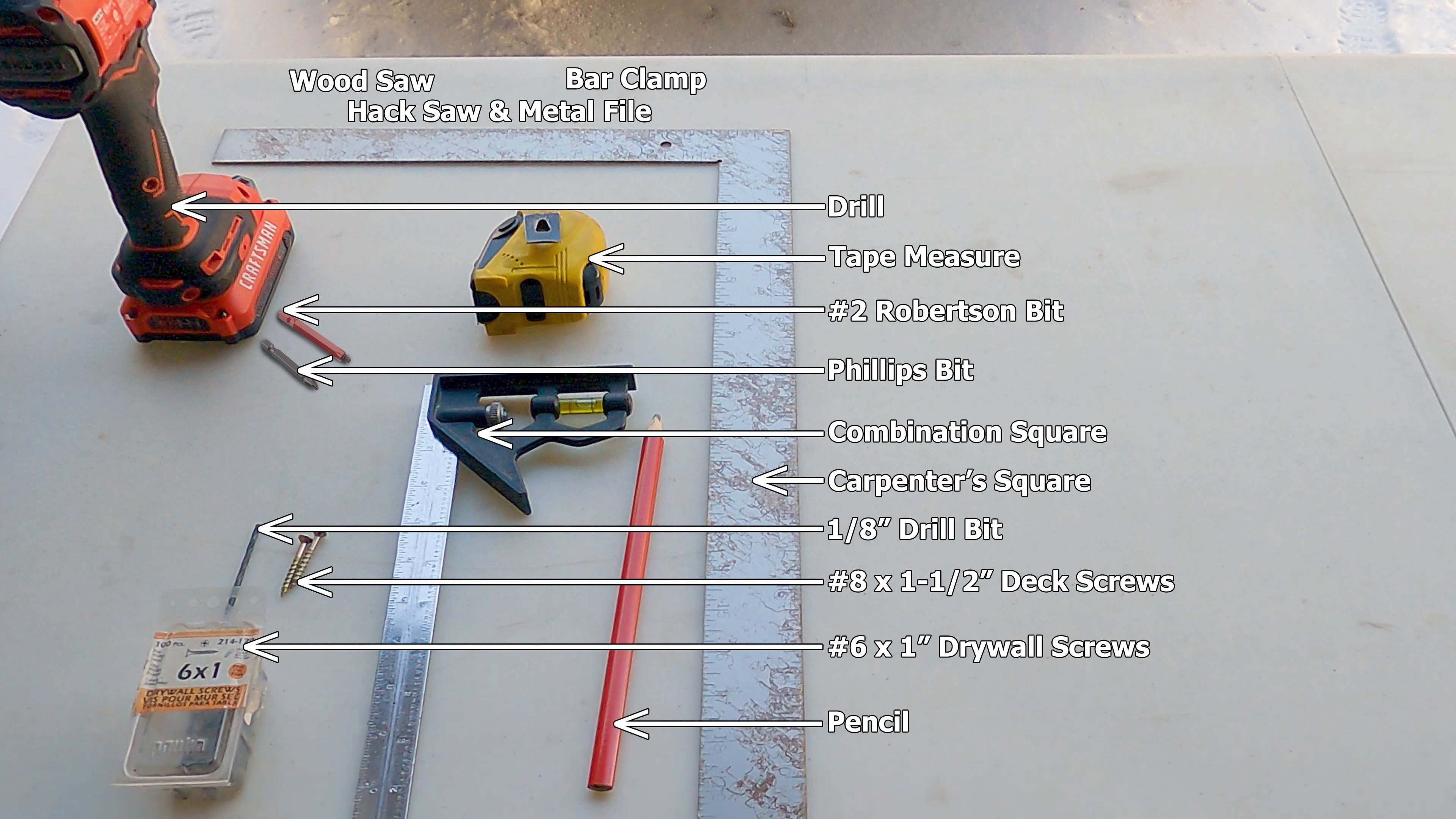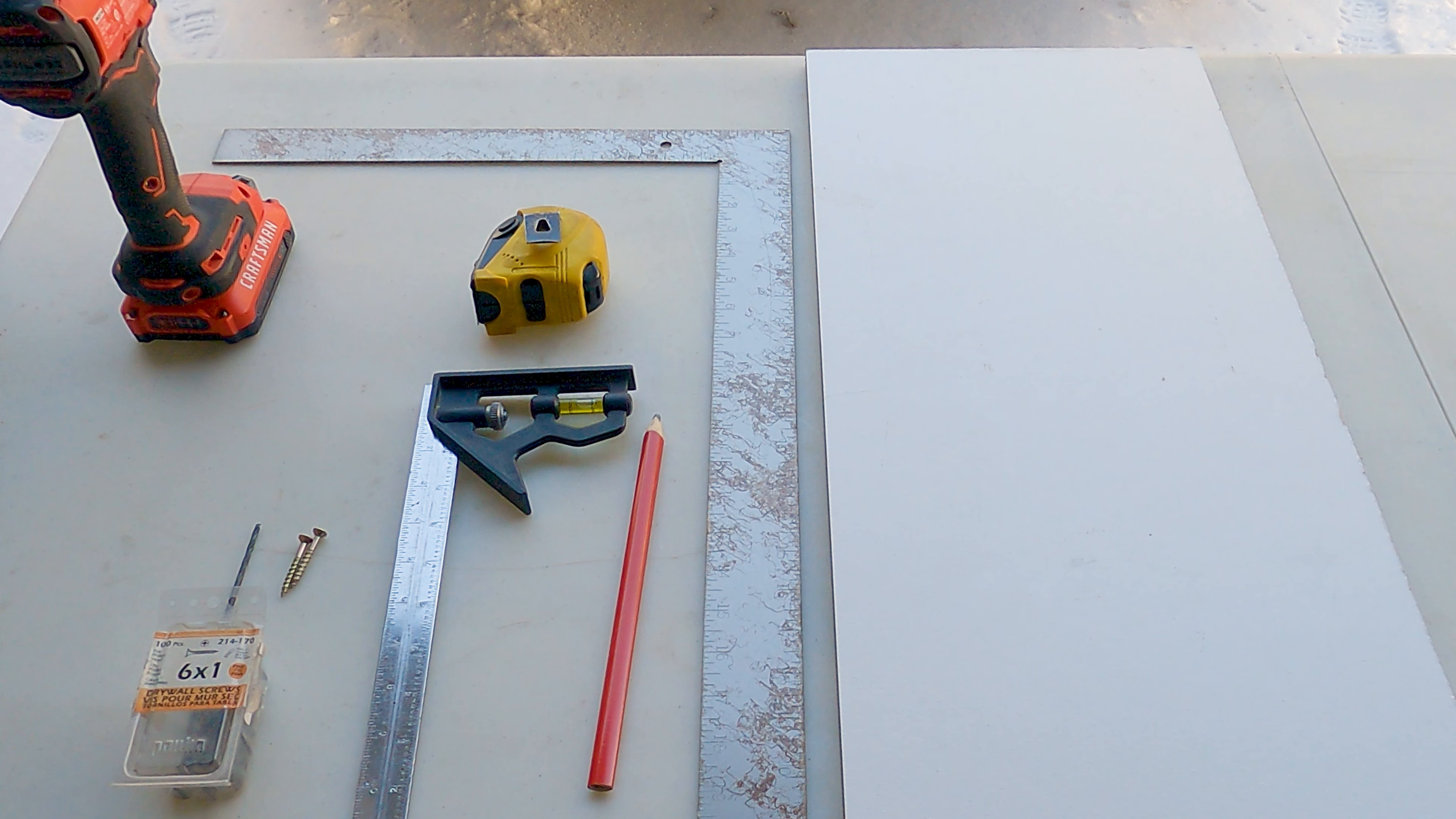Items not pictured are a wood saw—I'm using a radial arm miter saw—a hacksaw to cut one end off the spit rod extension and a metal file to clean up the burrs, and lastly a bar clamp to act as a third hand during assembly. I'm using the shelf I saved from an old pantry for the base, and a scrap piece of two-by-four for the upright.